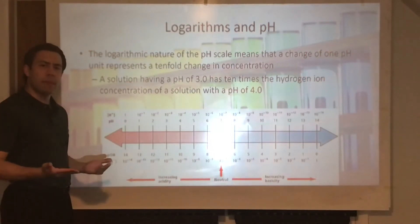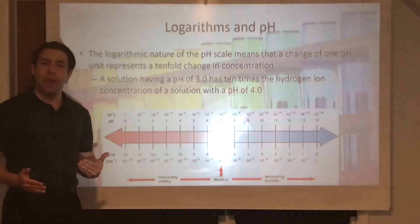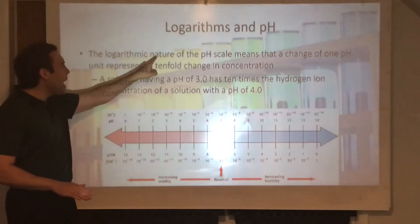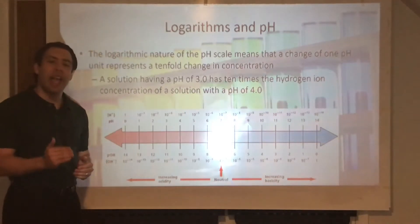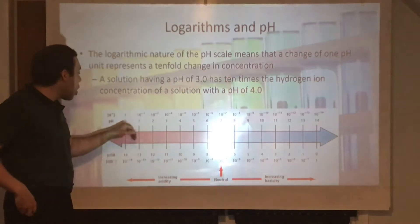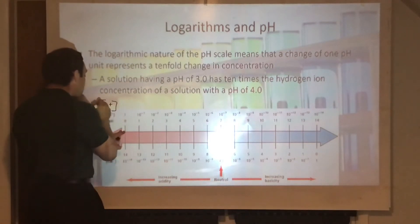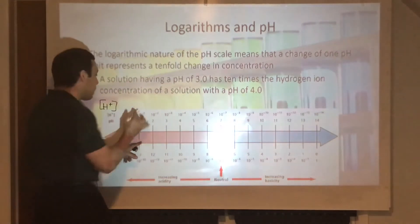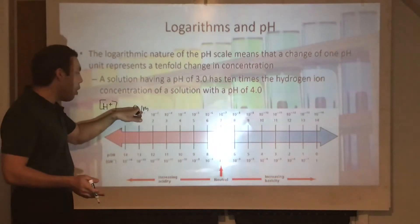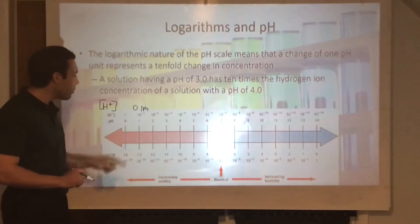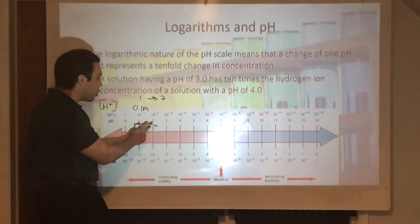But what do those numbers on the pH scale mean? The pH scale is a logarithmic scale. A change in one pH unit represents a tenfold change in hydrogen ion concentration. A pH of 1 means the H-plus ion concentration is 10 to the negative first, or 0.1 molar. If we go to a pH of 2, then we have an H-plus ion concentration of 10 to the negative second, or 0.01 molar.